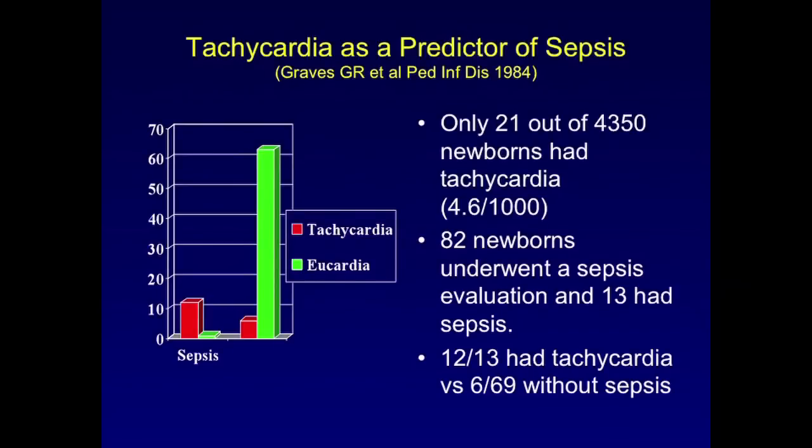If you look at newborns, heart rate alone is a very nice sign. Out of 4,350 newborns, only 21 had a fast heart rate, or 4.6 per thousand. So a very nice sign for term babies. 82 of these newborns underwent a sepsis evaluation, meaning blood cultures and a spinal tap, and 13 had sepsis. 12 of the 13 had fast heart rate, versus only 6 of 69 who did not have sepsis. So really, a fast heart rate when you're trying to recognize the process is a very good screening tool. Next slide, please.